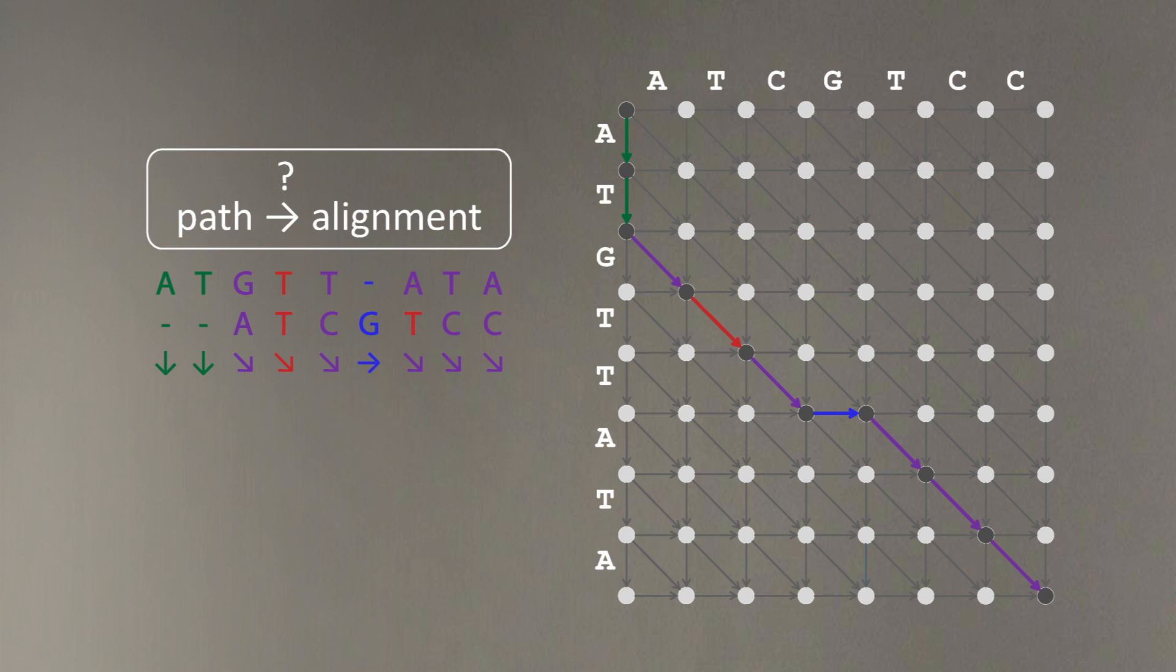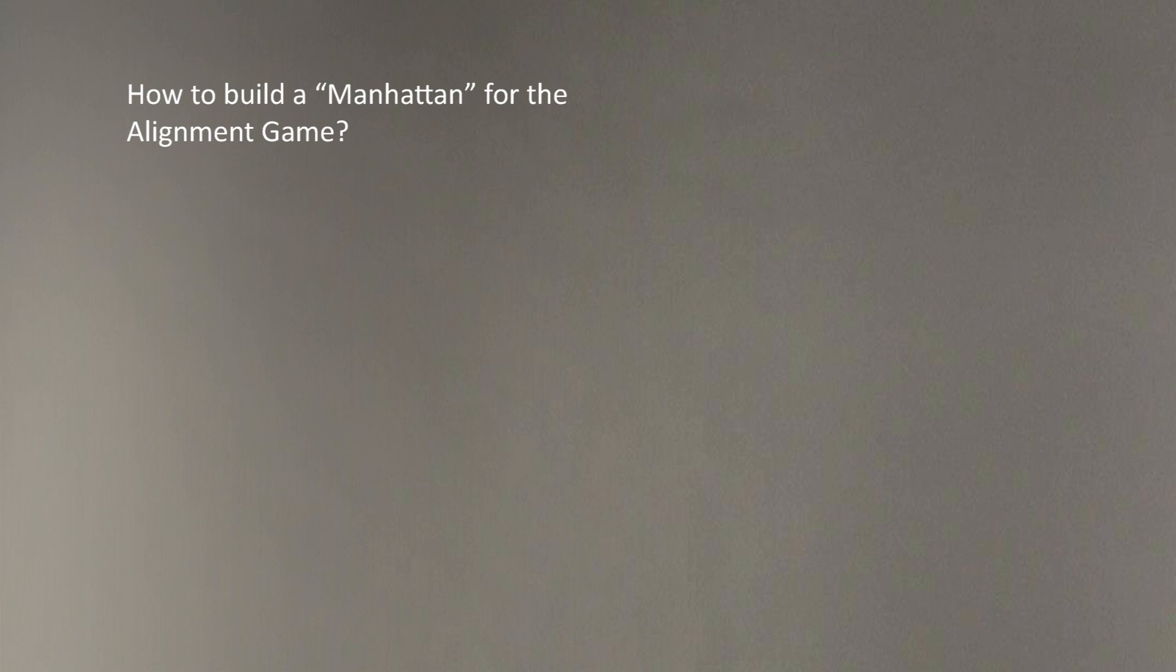Therefore, alignments are nothing but paths in the grid. And therefore, to play the alignment game, to construct longest common subsequence, the only thing we need to do is to travel optimal ways in the graph. And the question of sequence comparison problem in biology amounts to building an appropriate Manhattan. We'll do it a lot in this lecture.